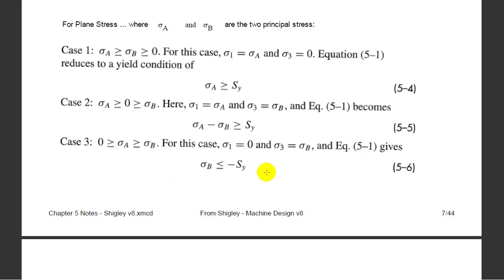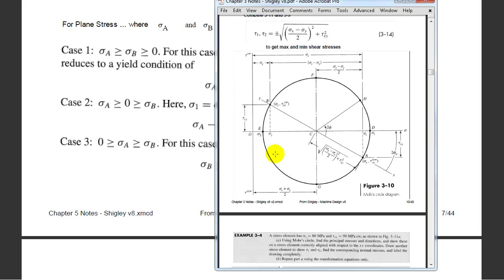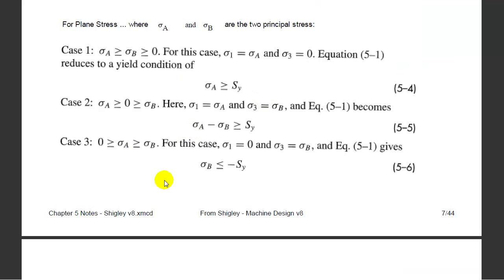Dr. Hatami had said you preferred to go back to the Mohr's circle diagram in all cases to think this through. I don't have any objection—I think it's fine for a while. But at some point, once you've done it enough, you can learn to trust these equations and use them. They will save you a lot of time. Eventually, just look at the magnitudes and signs of your principal stresses and choose the appropriate easy formula for determining whether you fail or not.